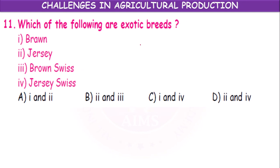Which of the following are exotic breeds? Options: Brown, Jersey, Brown Swiss, Jersey Swiss. Brown is not an exotic breed. Jersey is an exotic breed. Brown Swiss is also an exotic breed. Jersey Swiss is not. So 2 and 3 are correct — answer is B.